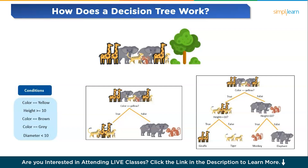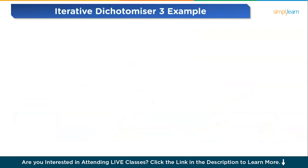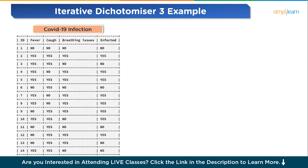Now let's move forward to ID3 with an example. ID3, short for Iterative Dichotomizer 3, is a decision tree algorithm invented by Ross Quinlan. It works by repeatedly dividing features into groups to build a decision tree. Here we will be using a sample dataset of COVID-19 infection. The columns are straightforward: Y stands for yes and N stands for no. In the infected column, Y means infected and N means not infected. Columns like breathing issues, cough, and fever are called features, and the infected column is the target column used for the decision outcome.